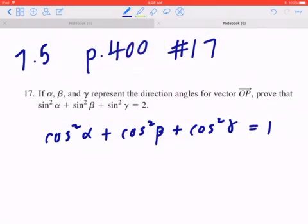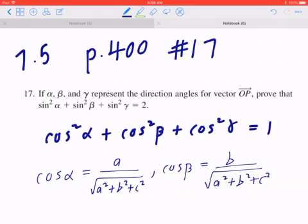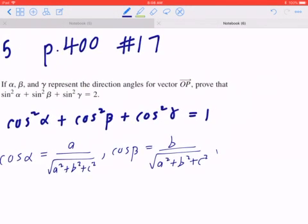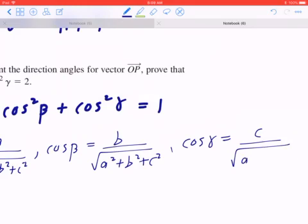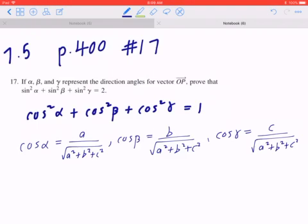And again, this is true because if you go back to the basic definition of cosine alpha, it's A divided by the square root of A squared plus B squared plus C squared. And likewise, if you think about cosine beta, that's going to be B divided by the square root of A squared plus B squared plus C squared. And cosine gamma equals to C divided by the square root of A squared plus B squared plus C squared. So what happens is when you square them and you add them up, the top will give you A squared plus B squared plus C squared all over A squared plus B squared plus C squared, which equals to 1.